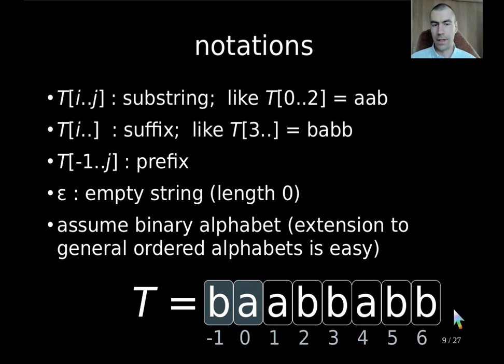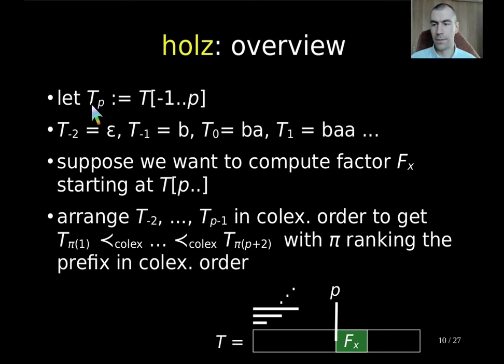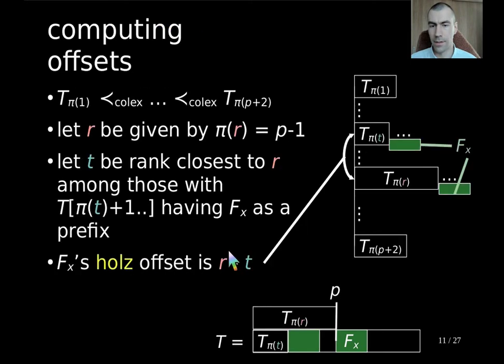So what is Holz exactly? For that, we define with tp the prefix up to position p, and not only that, because we already started at minus two, which is just an empty string, and then we continue with the prefixes. Now, suppose we want to compute a factor Fx starting at position p. What we do is that we arrange all these previous prefixes in the colex order, such that we get this ordered list, where pi denotes the ranking of the prefixes in the colex order. So we get this picture of these prefixes, and we are at position p, where we want to compute the Holz offset of Fx. With that, we visualize this list now vertically.